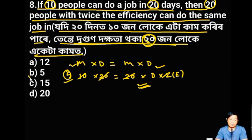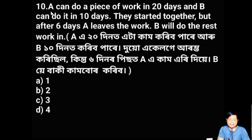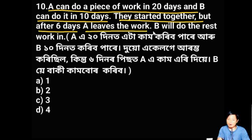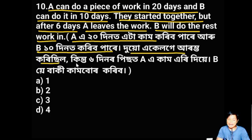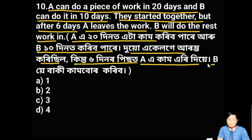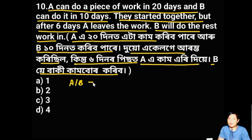A can do a piece of work in 20 days and B can do it in 10 days. They started together, but after 6 days A leaves the work. B will do the rest of the work in how many days? After A leaves at 6 days, B does the remaining work alone.